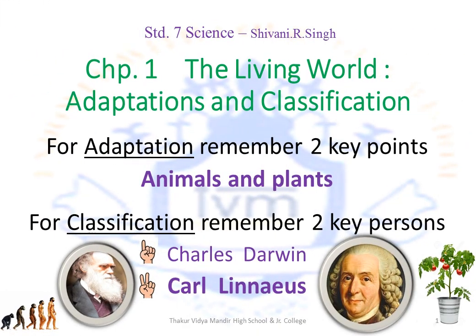Standard 7 Science, Chapter 1: The Living World. This chapter is divided into two parts: adaptations and classifications. We will learn the adaptations in animals and plants. For classifications, we will remember two key persons — Charles Darwin and Carl Linnaeus — who have given two principles each for classification.